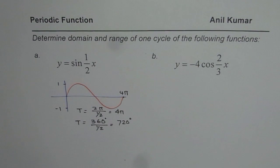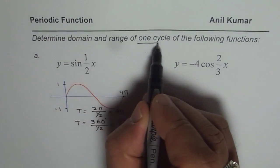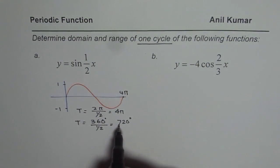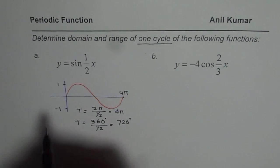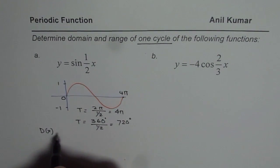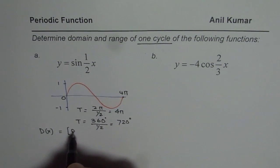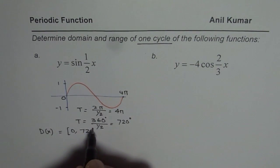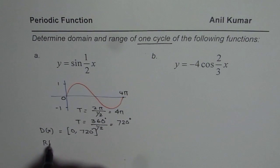One full cycle is completed in 720 degrees. Therefore, domain of one cycle, remember one cycle, will be from 0 to 720 degrees. So we can write domain for this function as 0 to 720 degrees. As far as the range is concerned, as you can clearly see, it is from minus 1 to plus 1, both included.